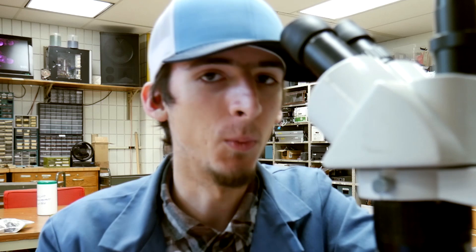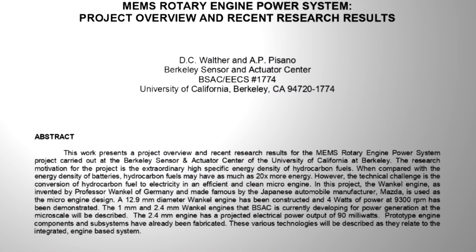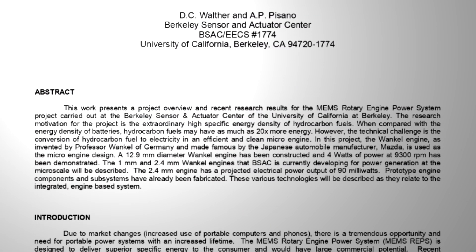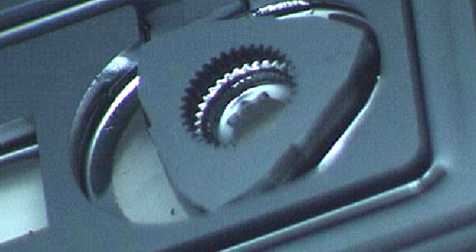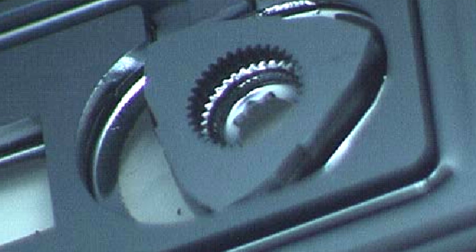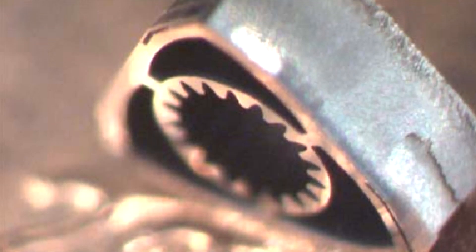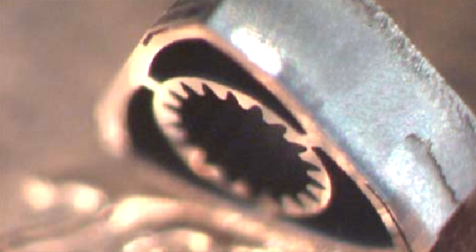Now there is one interesting difference with these small engines: there are no apex seals. Instead, the rotors have a cantilever spring on the edges to make the seal.